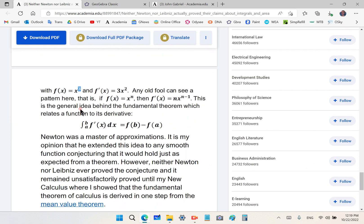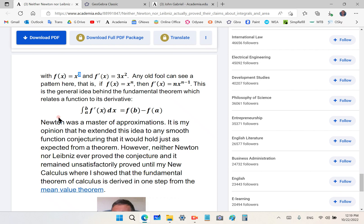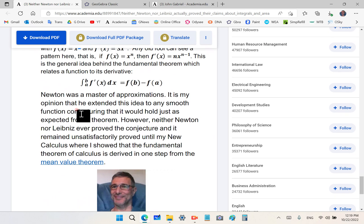This is a general idea behind the fundamental theorem and how it relates to its derivative. This is the correct way to express it: the integral of f prime of x is equal to, from a to b, is equal to f of b minus f of a. Newton was a master of approximations. It is my opinion that he extended this idea to any smooth function, conjecturing that it would hold just as expected from a theorem.